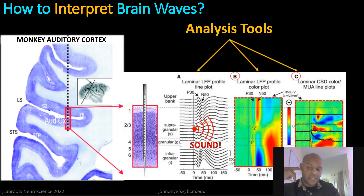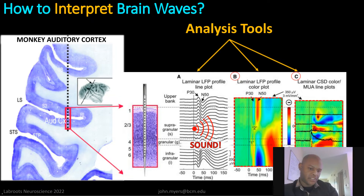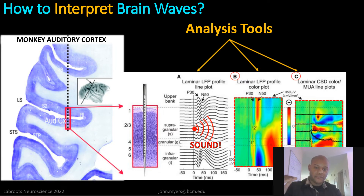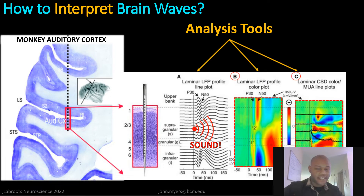The final measure here is CSD, or current source density. This tells us how local the activity is and gives us an indicator of the current sources and sinks — the input and output of electrical activity at this particular location. Across the cortical layers one through six, you can see inputs and outputs, the sources and sinks, the positive and negative signals, the blues and reds. You can see different distributions of patterns there.